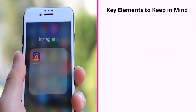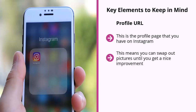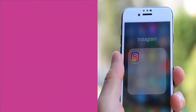When optimizing, here are the key elements you should focus on. First, Profile URL — this is your profile page on Instagram. You can change the picture and the description, but make sure you go element by element. Swap out pictures until you get a nice, sustainable improvement, then change the text to see if it improves your click-through rate, and then change the landing page URL. Second, Photos and Videos — pay attention to engagement levels and click-through. If certain photos tend to get a lot more clicks, post more of those photos and keep posting similar photos until you reach a sustainable high level of click-throughs.